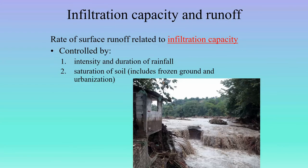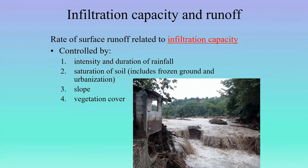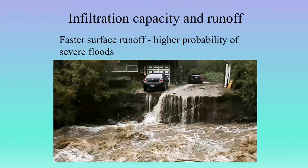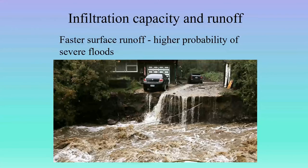Slope plays an important role — the steeper the slope, the more water runs off the surface and the less chance it has to soak in. Vegetation cover also matters: plants protect the ground from direct raindrop impact, reducing erosion, and the plants themselves absorb some of that water. Basically, the faster the surface runoff for whatever reason, the higher the probability of severe floods. As we see with urbanization, the more we build, the more water gets flushed into a stream system.